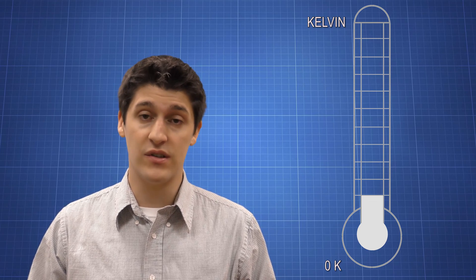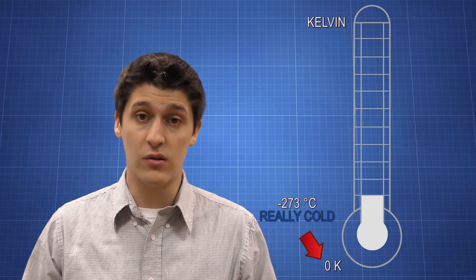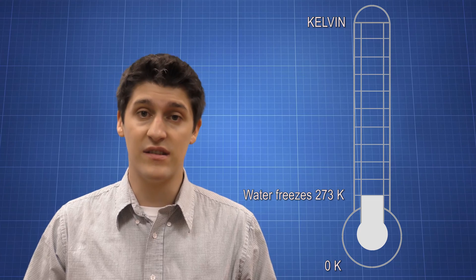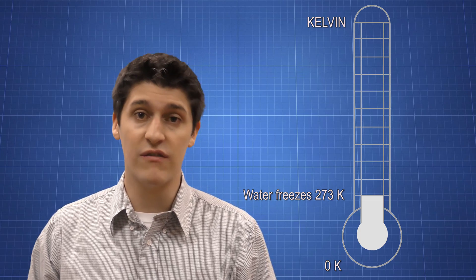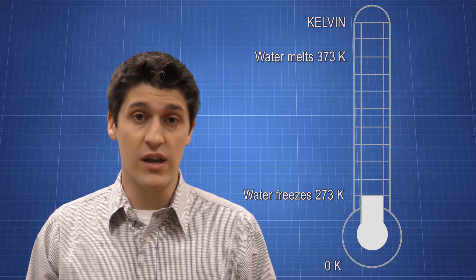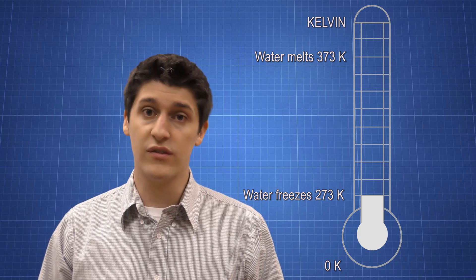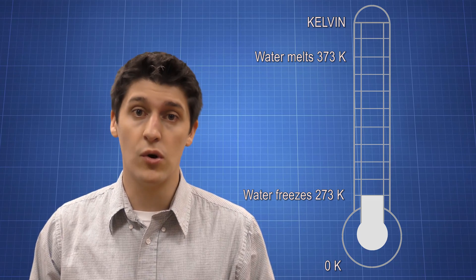Kelvin is the absolute temperature scale. At zero Kelvin, the average kinetic energy of the molecules in something is theoretically zero, so there's very little movement of the particles at that temperature. 273 Kelvin is the same thing as zero degrees Celsius or 32 degrees Fahrenheit, the temperatures water freezes at. 373 Kelvin is the same thing as 100 degrees Celsius or 212 degrees Fahrenheit, the temperature water boils at.